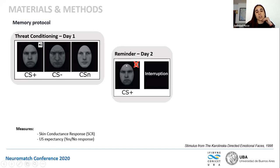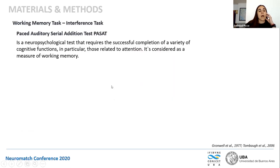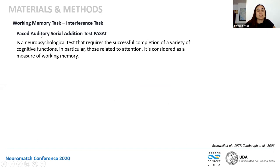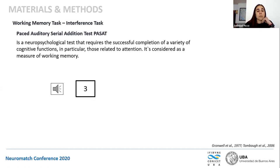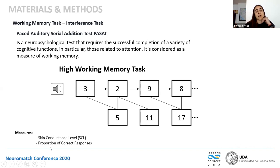On day two for the reminder session, participants only see one presentation of the CS+ in absence of the tone, and the task is interrupted by an interruption sign displayed on the screen. On day three there is a classical extinction followed by a reinstatement. For the interference task, in order to overload the transient memory system reactivated by the reminder on day two, we use the Paced Auditory Serial Addition Test — PASAT — which consists of a pre-recorded audio with a number series from one to nine. Participants are asked to add systematically the last two numbers they hear. For example, if they hear three then two, they say five; then nine, so eleven; then eight, so seventeen. We measure skin conductance level and proportion of correct responses.